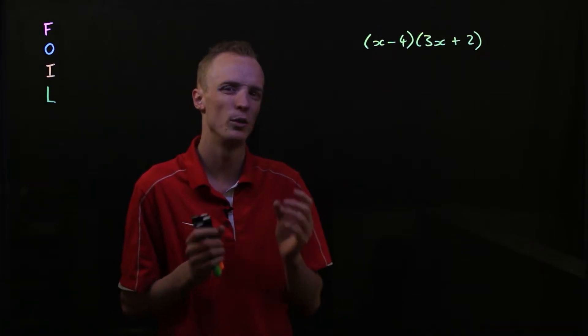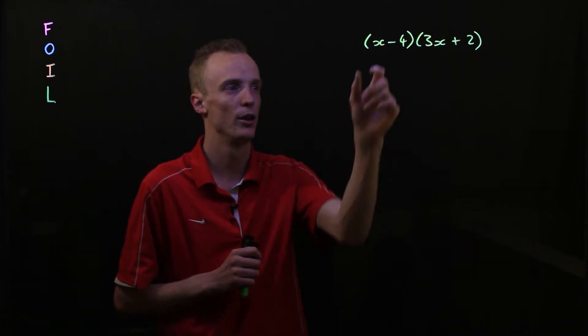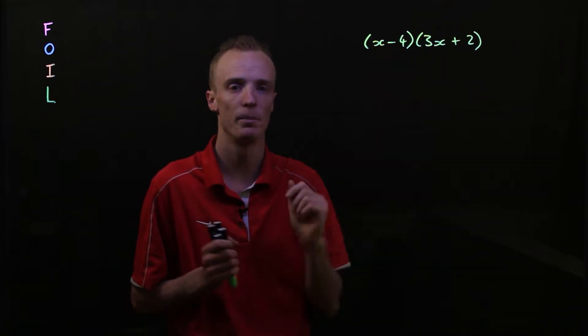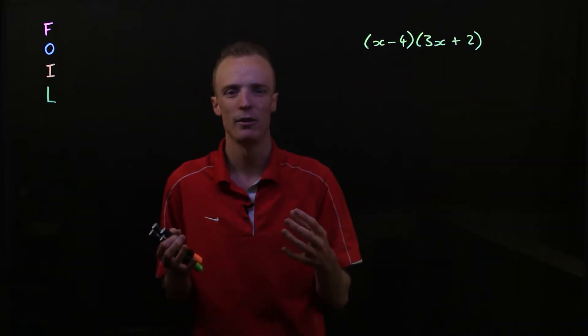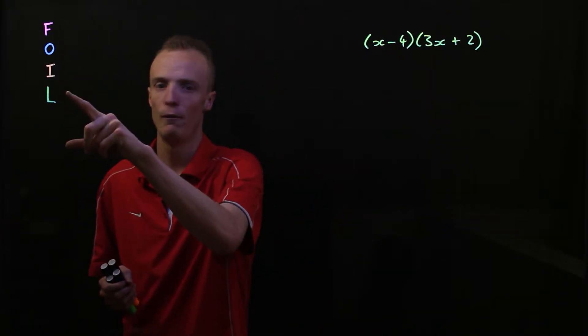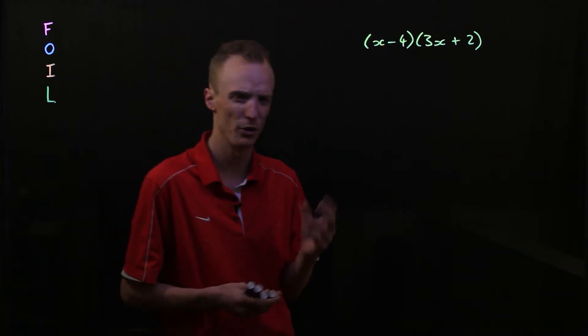Now whenever you've got this sort of unique situation where you've got two terms in one bracket multiplied by two terms in the other bracket, we can actually use an acronym to help us make sure that we expand these correctly, and that acronym is FOIL. So let's go through it.